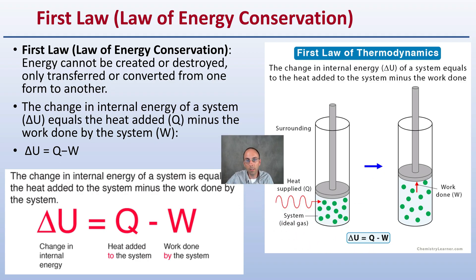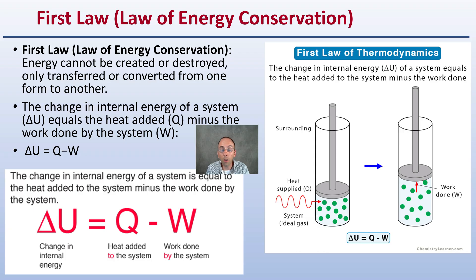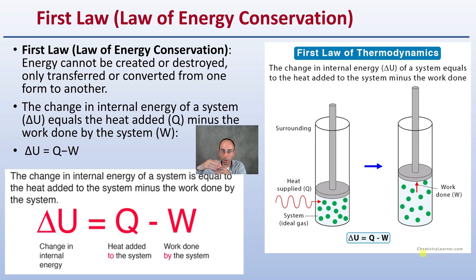The first law is the law of energy conservation: energy cannot be created or destroyed, only transferred or converted from one form to another. The change in the internal energy of a system is represented by delta U. This equals the heat added to the system, represented by Q, minus the work done by the system, represented by W. So Q minus W equals delta U, where delta stands for change. We can see a visual representation here with a gas being compressed and then released, illustrating that first law of thermodynamics.